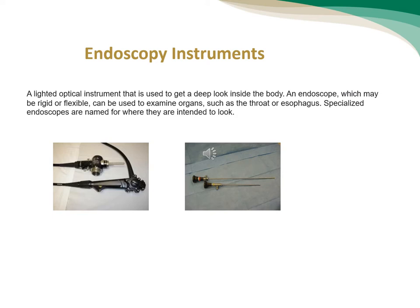Endoscopy instrument: a lighted optical instrument that is used to get a deep look inside the body. An endoscope, which may be rigid or flexible, can be used to examine organs such as the throat or esophagus. Specialized endoscopes are named for where they are intended to look.